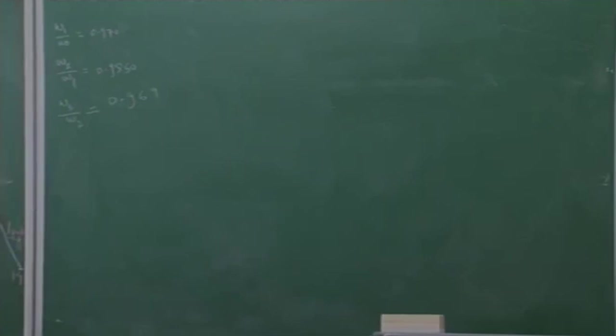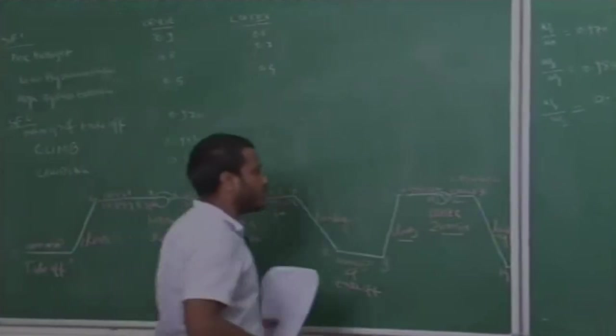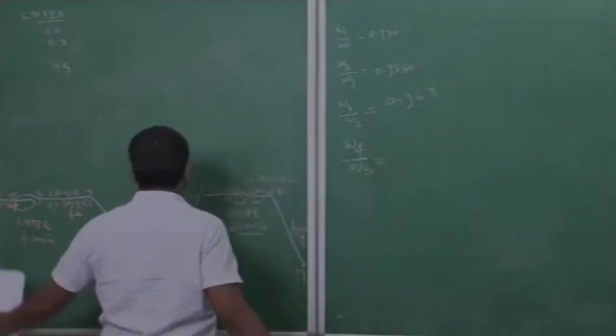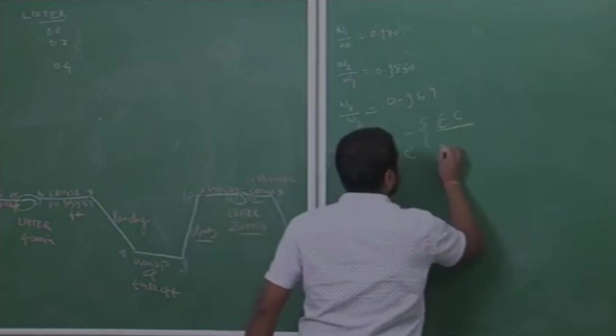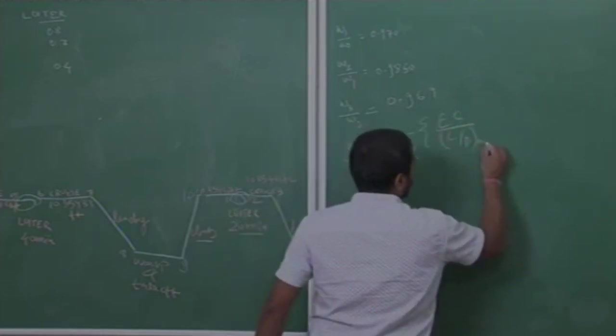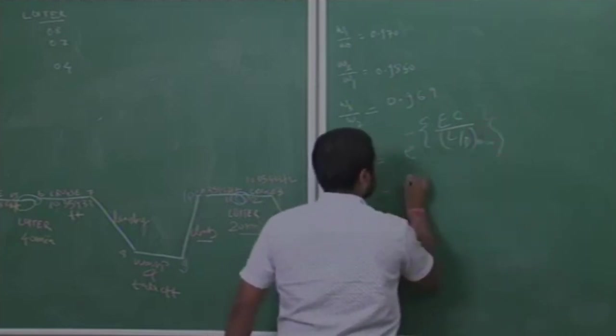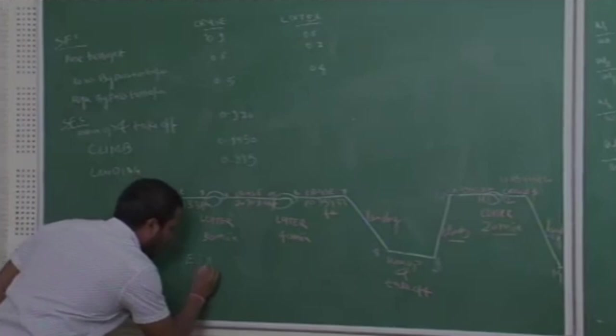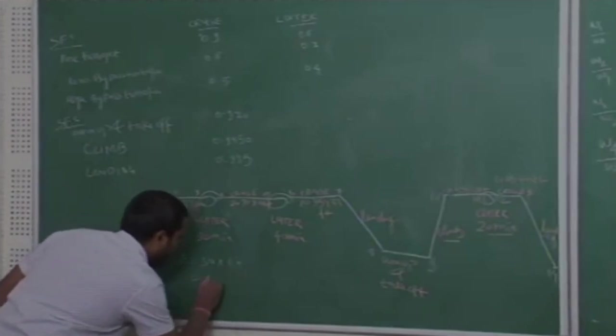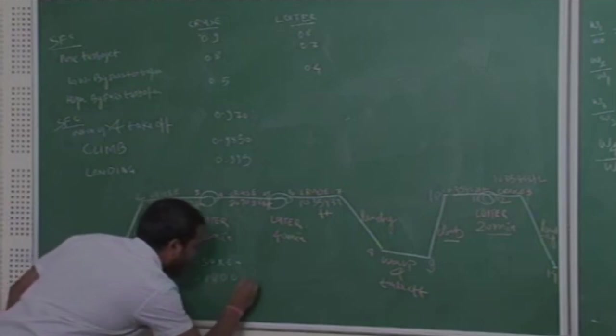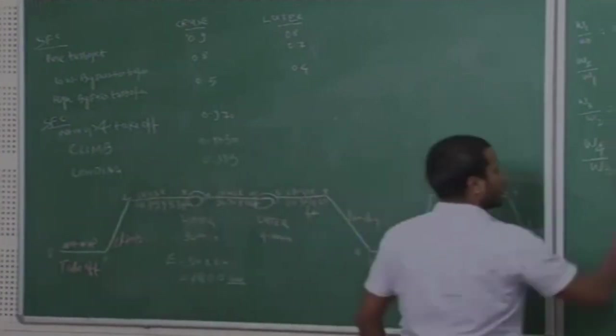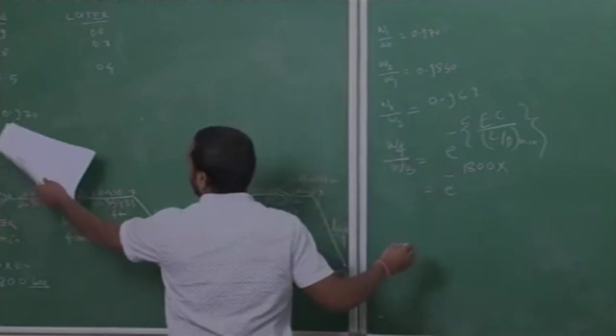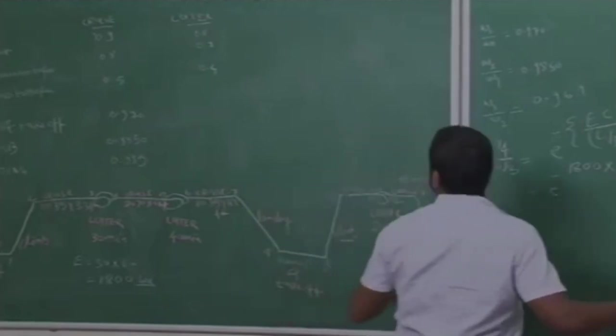Again, we need to find the ratio of W4 by W3, the weight fraction of W4 by W3 that is in the loiter case. For loiter, e times C divided by L by D max. For e, you need to convert 30 minutes into seconds. For pure turbojet engine in loiter case, the C is 0.8.